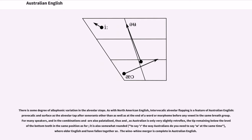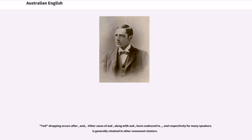The wine-whine merger is complete in Australian English. Yod dropping occurs after /s/, /l/ and /z/. Other cases of /tj/ and /dj/, along with /sj/ and /zj/, have coalesced to /ʧ/, /ʤ/, /ʃ/ and /ʒ/ respectively for many speakers. /j/ is generally retained in other consonant clusters.